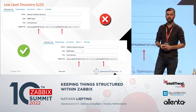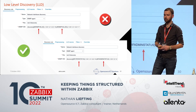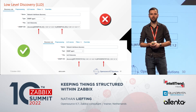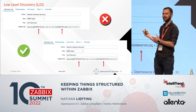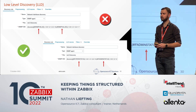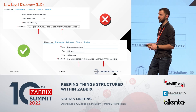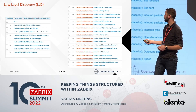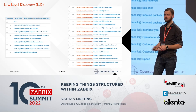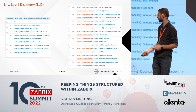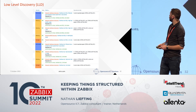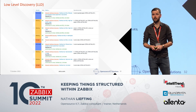One more thing about low-level discovery: use your prefixes — make sure to prefix those item prototypes. Also, something I see a lot: poorly named macros like '#SNMPVALUE.' We can make up these macros ourselves, so give them a nice descriptive name. It will make it a lot easier to find and use the right macros. The Linux template itself is a good example — 'Interface {#IFNAME}' prefixes all interface items together, and alphabetical sorting gives you a nice grouped list.